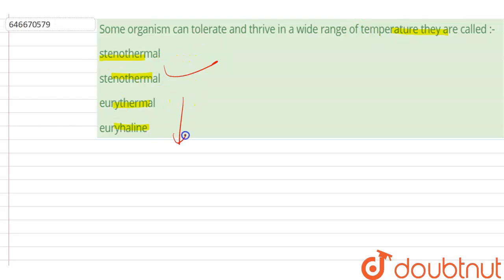Stenothermal organisms are those which are capable of living or growing within a limited or narrow range of temperature. Stenothermal can be divided into two types.